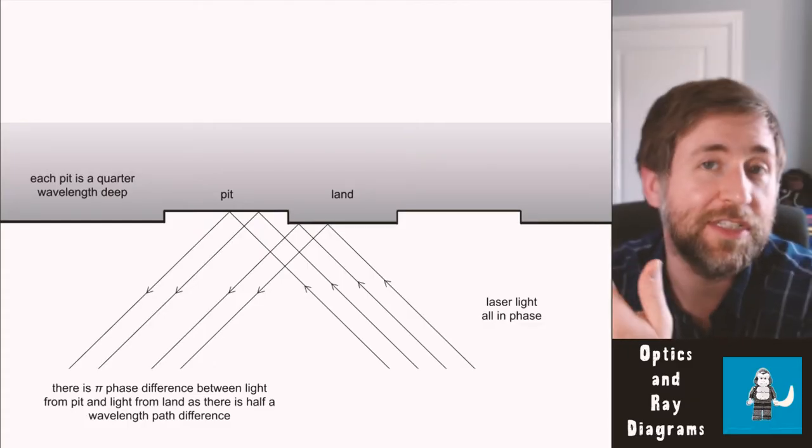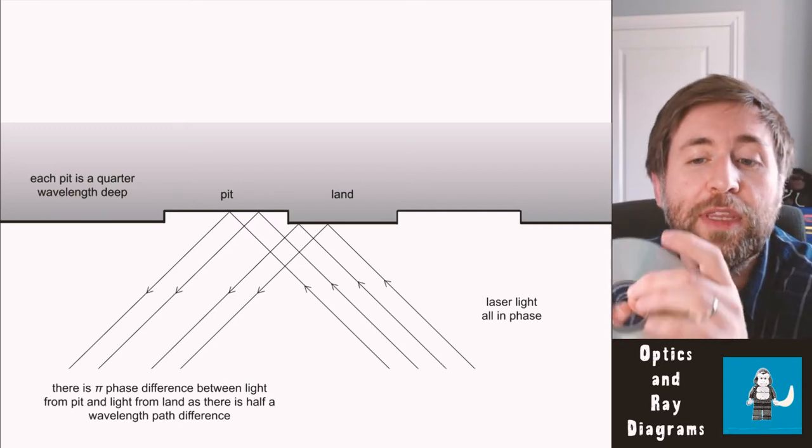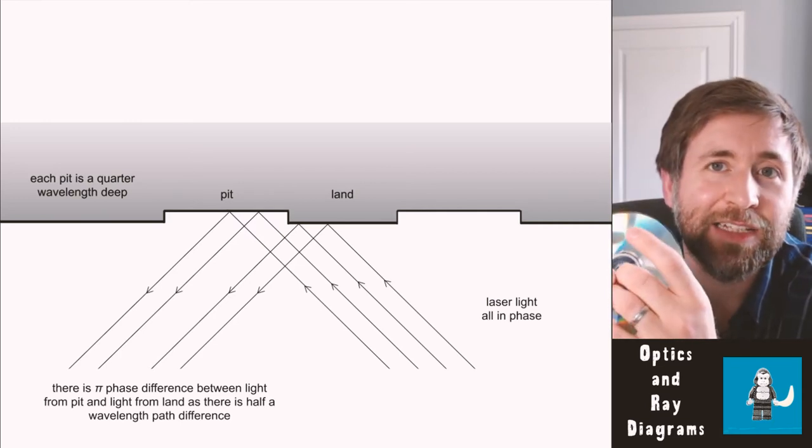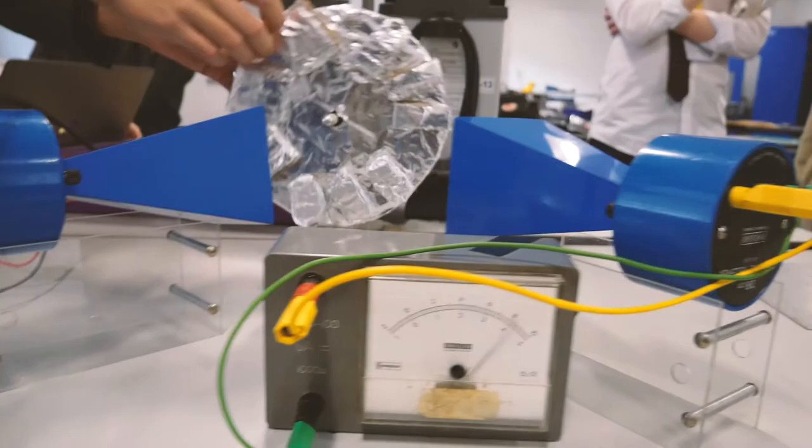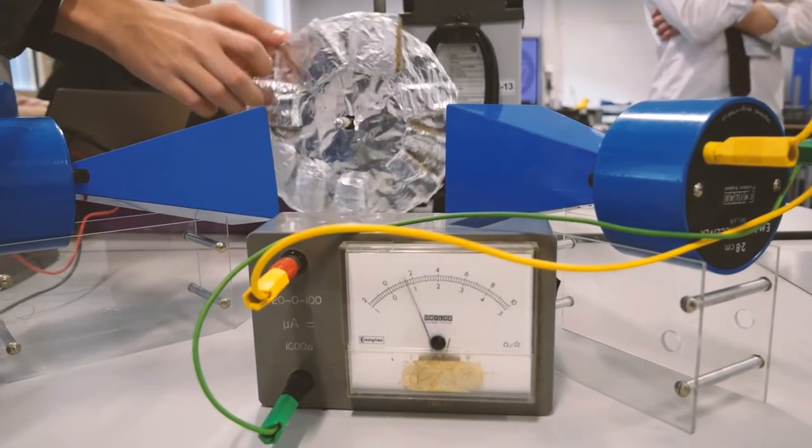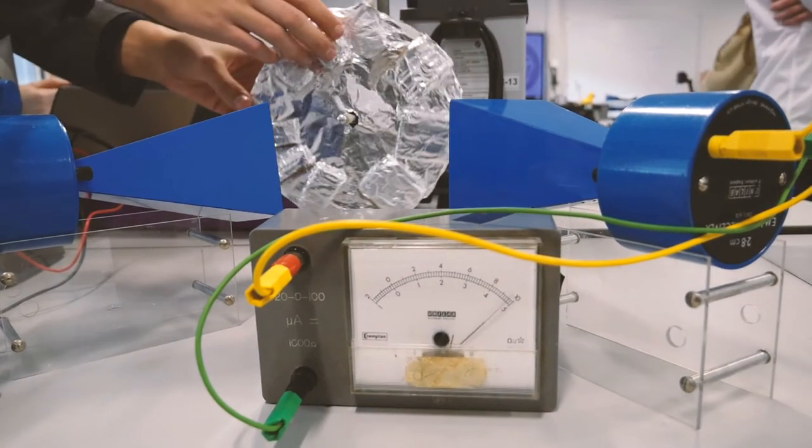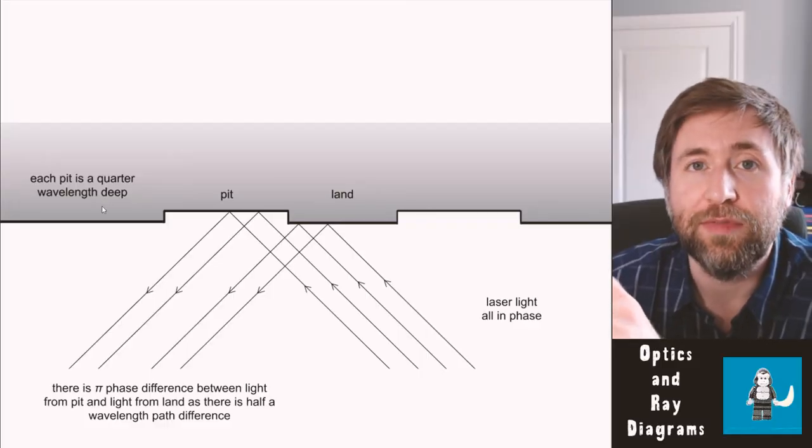A good example of this is a CD or a blue ray or DVD. They are optical recording devices and the way they work is they have had pits and lands carved into them corresponding to ones and zeros in digital code. So the land is a slightly raised bump and the pit is a laser etched mark. And the depth of the pit is a quarter wavelength.